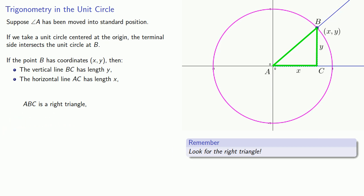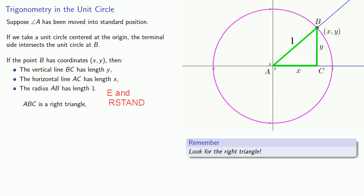Now we know AC is x and BC is y, but what about this third side AB? Well, remember, that's the distance between the center of the circle and a point on the circle. And since this is a unit circle, the radius AB has length 1.